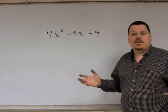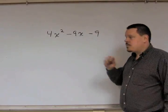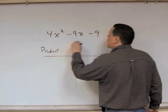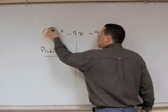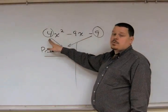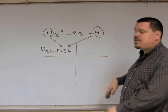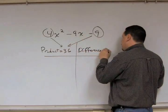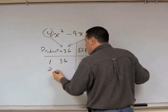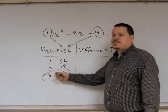So what is this longer method? You still have to find two numbers with a specified product and a specified sum or difference. The one small difference from before is that your product is going to be not just 9, but the product of the leading coefficient and the constant — 4 times 9, which is 36. Before, with a leading coefficient of 1, it was simply 1 times 9 equals 9. So the product is 36 and the difference is 9. Looking at factor pairs of 36: 1 and 36, 2 and 18, 3 and 12 — right there, 12 minus 3 equals 9, so we have our pair.